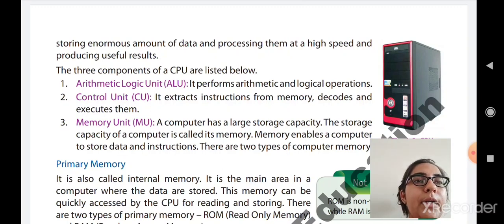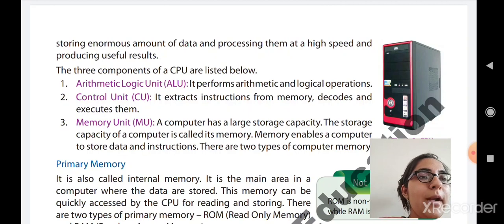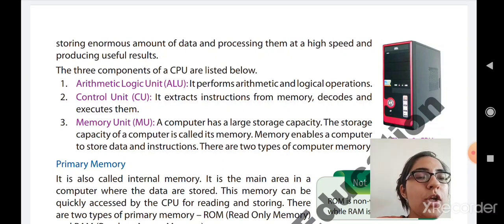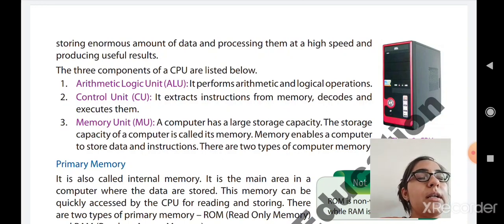The second component is CU — the Control Unit. It fetches instructions from memory, then decodes and executes them. A computer does not understand human language; it understands machine language. So when the user gives input in human language, the control unit encodes it to machine language, processes it, then decodes it back to human language, and gives us the output. That process is done by the Control Unit.